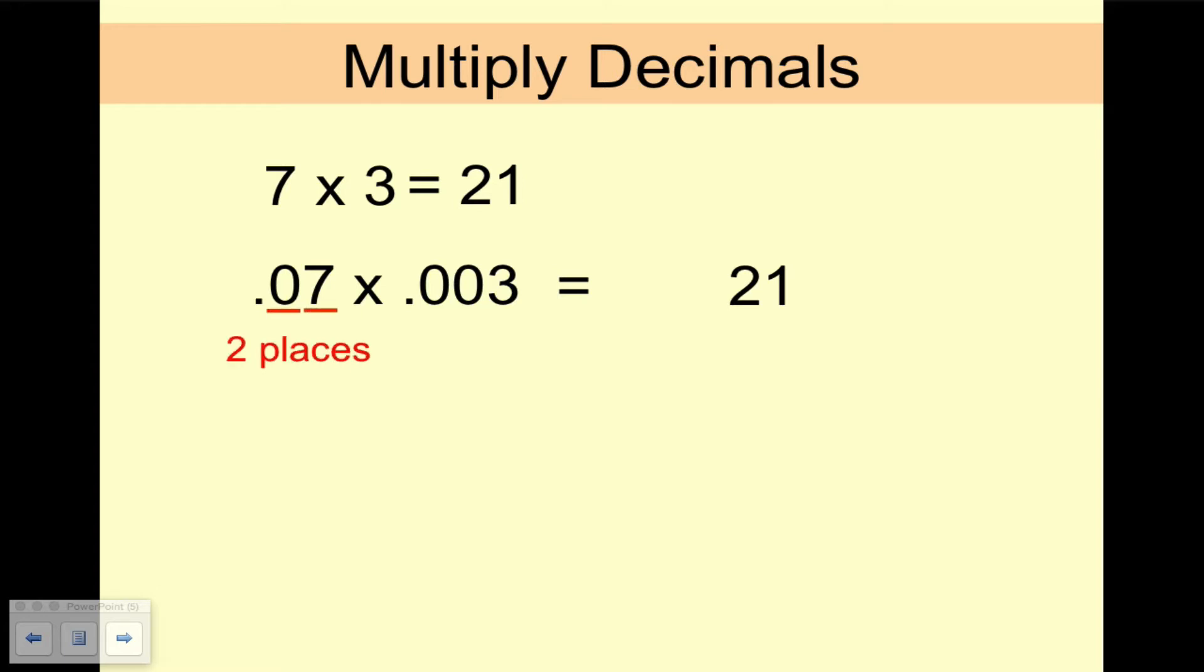How about 0.003? Yep, it has 3 places after the decimal point. So altogether, our answer should have 5 places. We add the number of places of each of the factors, and that's how many places there are in the product.